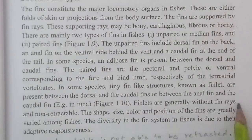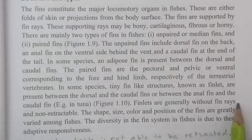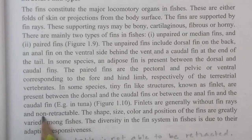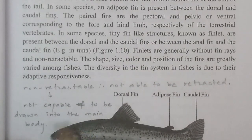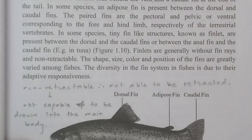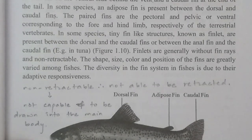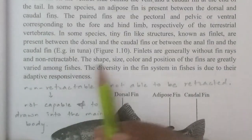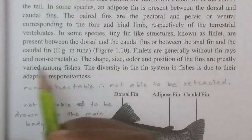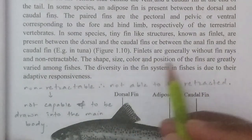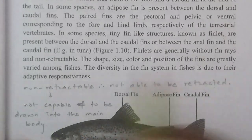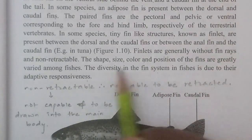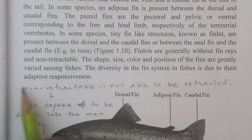Finlets are generally without fin rays. The fins are non-retractable — not capable of being drawn into the main body. The shape, size, color, and position of the fins are greatly varied among fishes. The diversity in the fin system in fishes is due to their adaptive responses.